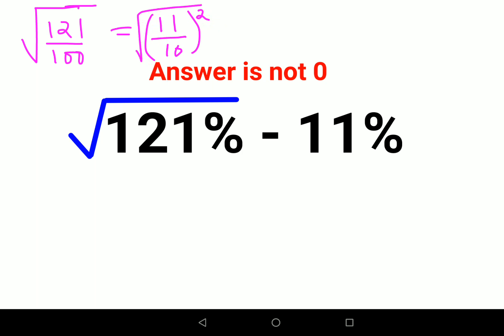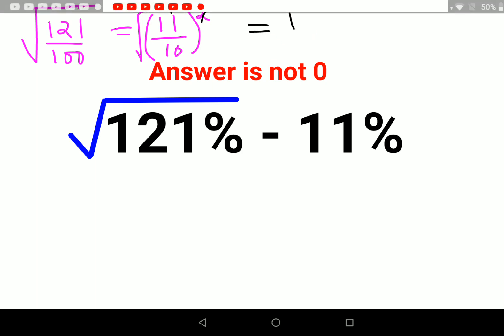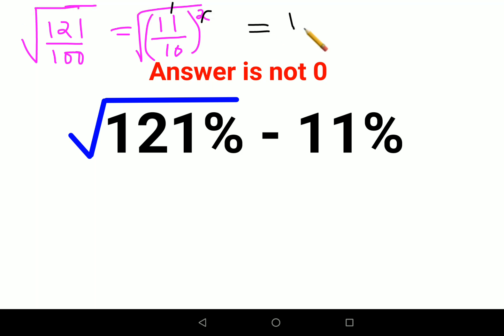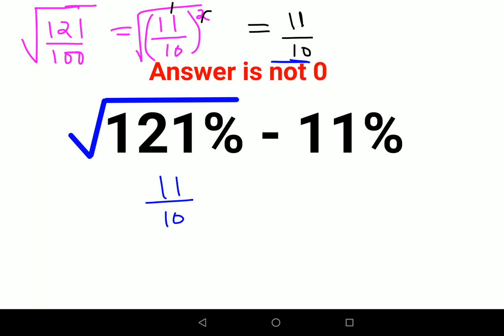If you look closely, the root and the square will cancel. So what you are getting is 11 upon 10. Now instead of root of 121%, I am going to put this value. So what we have is 11 upon 10.